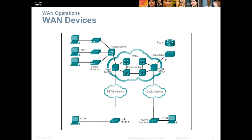WAN devices. Normally your router connects to a WAN device, sometimes called a modem or a CSU-DSU. In the upper right corner of this diagram, you can see a router connected to a CSU-DSU, and in the upper left, modems. There are other types — cable modems and DSL modems — and you see them all in this diagram. A company may utilize different WAN technologies in different areas. In a large city you may be able to purchase different types of WAN circuits than in a small rural area.